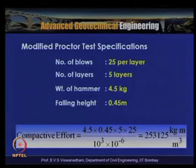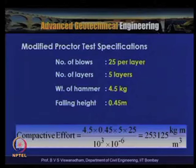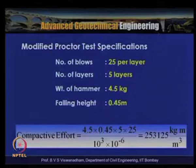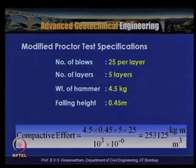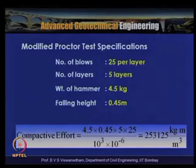In the Modified Proctor test, the number of blows per layer remains 25, but there are 5 layers instead of 3, the hammer weight is 4.5 kg (vs. 2.5 kg), and the drop height is 0.45 m (vs. 0.305 m). The compactive effort ≈ 2531 kJ/m³, which is approximately 4.5 times the energy of the Standard Proctor test.